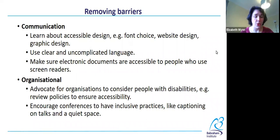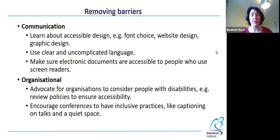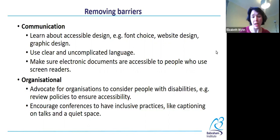Organizational: you can advocate for organizations to consider people with disabilities — for example, reviewing policies to ensure accessibility. At the Babram Institute, we're currently undergoing a major policy review, which includes performing equality impact assessments on all policies to ensure they are fair and don't have differential impacts, not only on people with disabilities but all people. You can encourage conferences to have inclusive practices like captioning on talks or providing a quiet space, which is useful for people with autism. If a conference has fantastic inclusive practices, tweet about it — highlight and really encourage it.